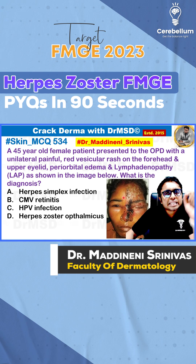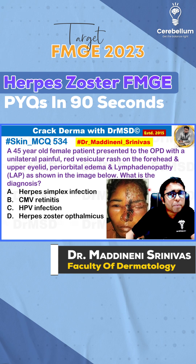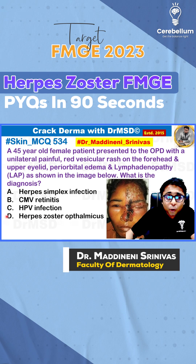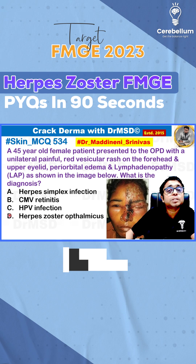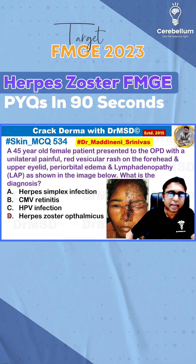This is a dermatology and ophthalmology integrated MCQ, and if you have marked the answer as option D — herpes zoster ophthalmicus — excellent, you are absolutely correct.